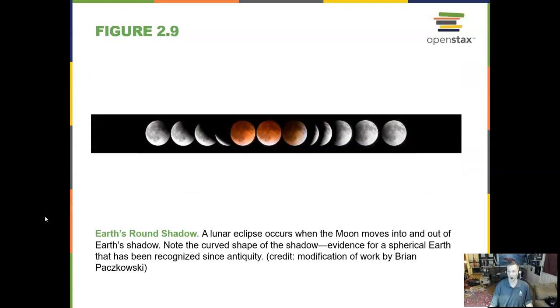Well, we know the earth is round because it produces a round shadow. Now we only see a shadow on the moon during a total lunar eclipse. And that's how we can see that it is round.